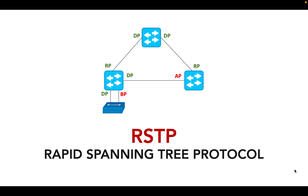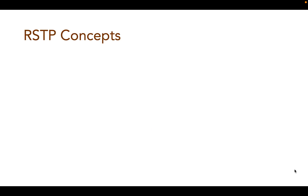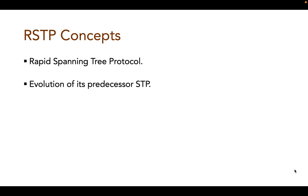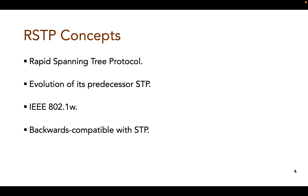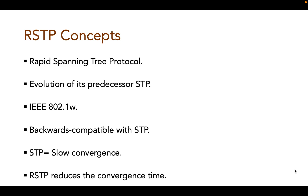RSTP, also known as Rapid Spanning Tree Protocol, is an evolution of its predecessor STP. It was introduced as standard IEEE 802.1W and is backward compatible with STP. One of the big disadvantages of STP is its slow convergence after a topology change occurs in the network, and to overcome this, RSTP was introduced, which significantly reduces the convergence time.